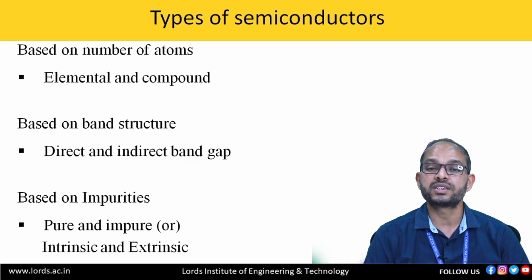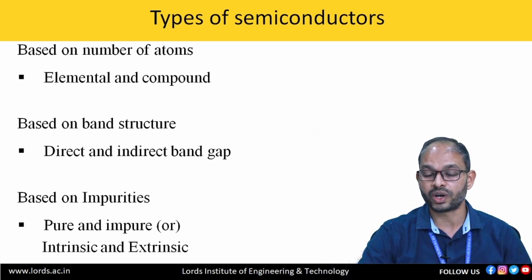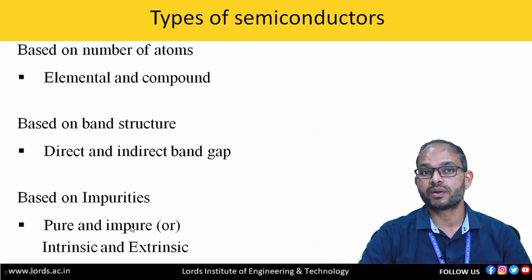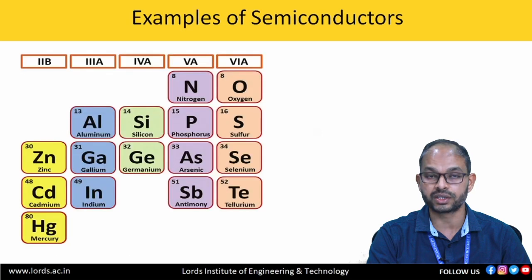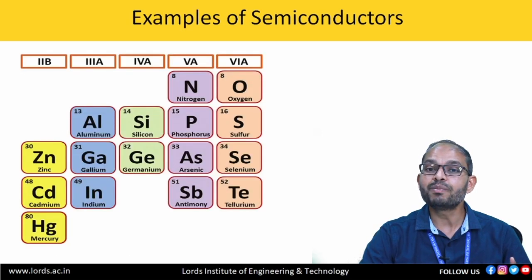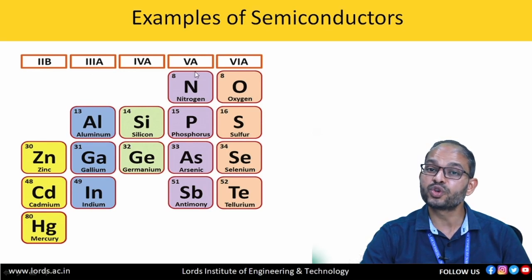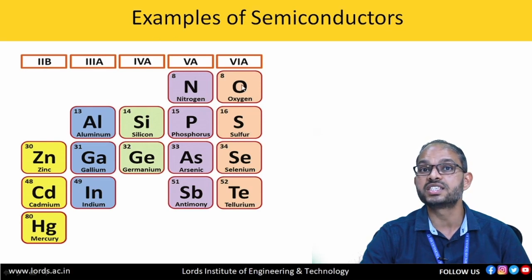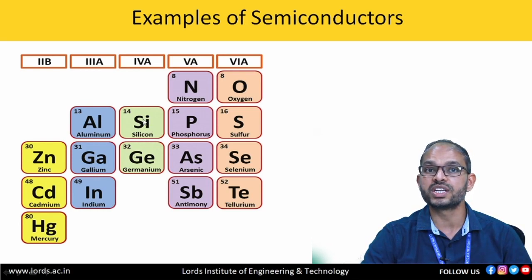Based on band structure, we have direct and indirect band gap semiconductors. Based on impurities, we have pure and impure semiconductors, or intrinsic and extrinsic semiconductors. We focus on pure and impure semiconductors as we are going to discuss about PN junction diode formation. The pure semiconductors belong to fourth group elements like silicon and germanium. By adding third and fifth group elements, we get compound semiconductors. By adding second and sixth group elements, we also get compound semiconductors. Elemental semiconductors contain only silicon or germanium atoms.